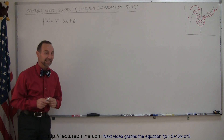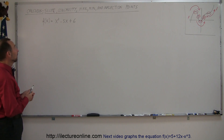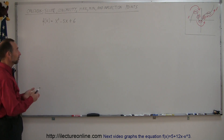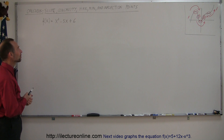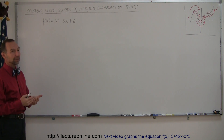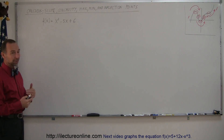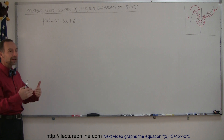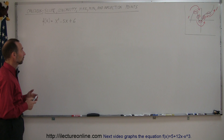Welcome to iLectureOnline. Here's a simple example for us to learn how to find the slope, the concavity, the max, the min, and inflection points on any given graph. You can right away recognize that this is a parabola, so in this case you're only going to find either a maximum or minimum — there are no inflection points. But let's go through the process, which is the same no matter what function you're starting with.